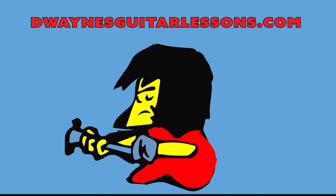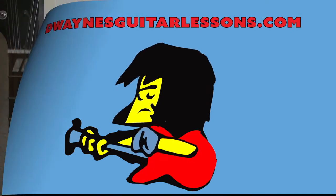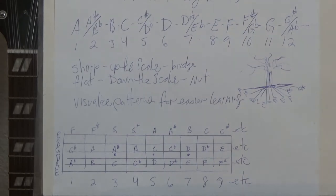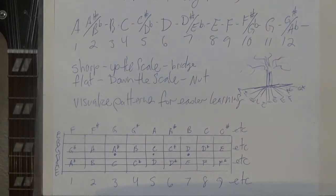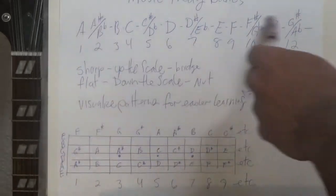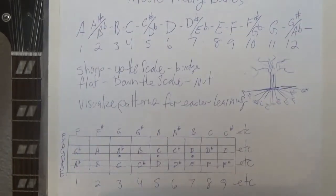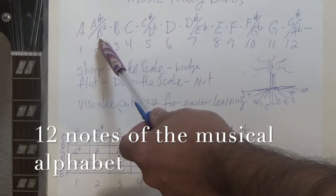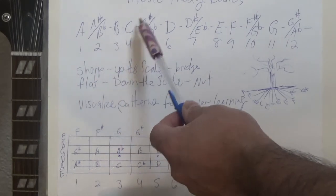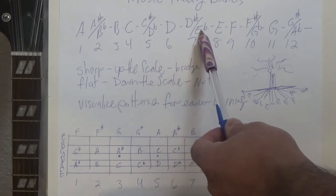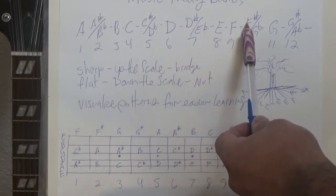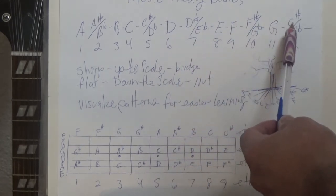Let's take a look. Here we go with our music theory basics. Music theory starts with our 12 notes — the 12 notes of the musical alphabet. We have A, A sharp or B flat, B, C, C sharp or D flat, D, D sharp or E flat, E, F, F sharp or G flat, G, G sharp or A flat.